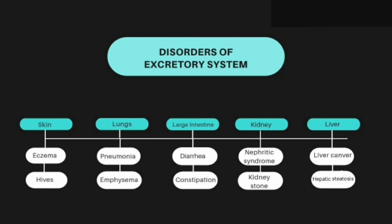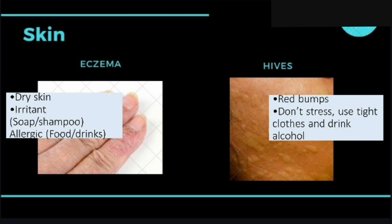There are a lot of diseases that can occur in the excretory system. For skin, there is eczema and hives. In the lungs, there is pneumonia and emphysema. In the large intestine, there is diarrhea and constipation. In the kidney, there is nephrotic syndrome and kidney stones. And last, in the liver, there is liver cancer and hepatic steatosis.